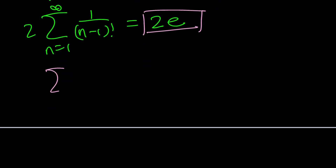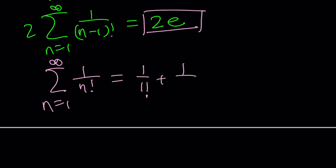The last term is the sum of 1 over n factorial from n equals 1 to infinity. This starts with 1 over 1 factorial, so it's missing the 1 over 0 factorial term. Therefore this sum equals e minus 1.